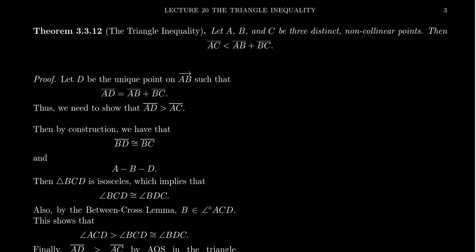The statement of the triangle inequality is the following: if A, B, and C are three distinct non-collinear points in congruence geometry, then the segment AC will be less than the segment AB plus BC.